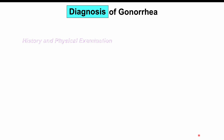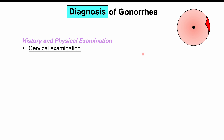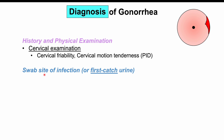Diagnosis begins with history and physical examination, looking for risk factors and symptoms — purulent urethral discharge in males and purulent vaginal discharge in females. Cervical examination may reveal cervical friability, which explains intermenstrual, postmenopausal, and postcoital bleeding, as well as cervical motion tenderness, a finding more specific to pelvic inflammatory disease. Laboratory work involves swabbing the site of infection to obtain a sample of the purulent discharge.